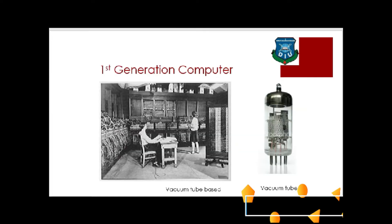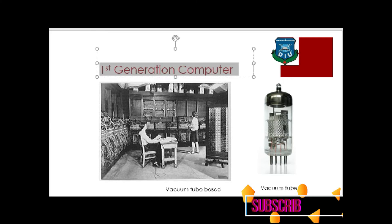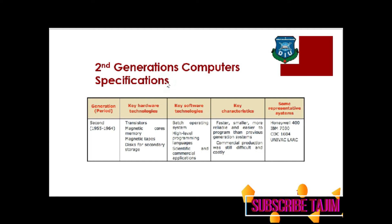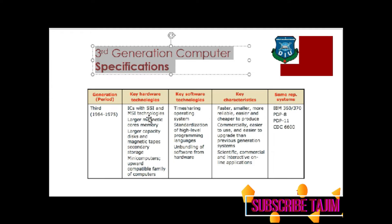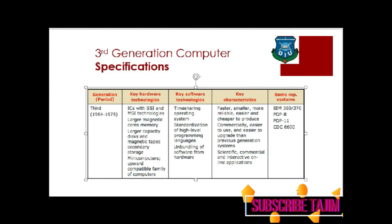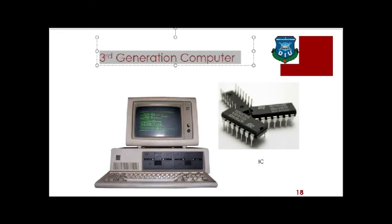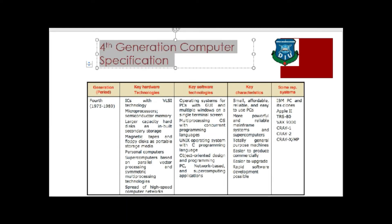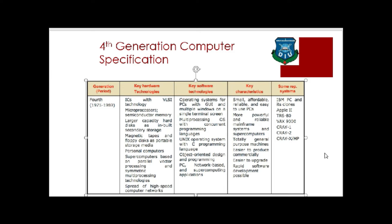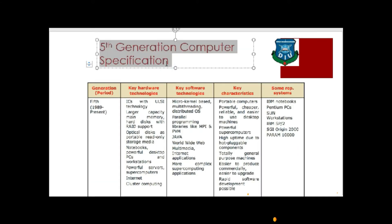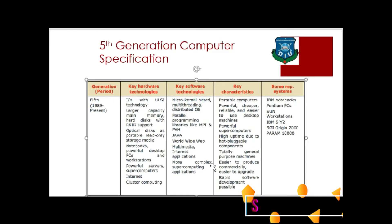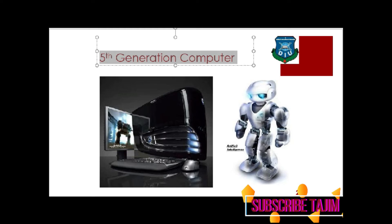The five computer generations include: First Generation Computer, Second Generation Computer with its specifications, Third Generation Computer, Fourth Generation Computer with its specifications, and Fifth Generation Computer with its specifications.